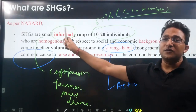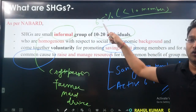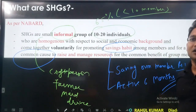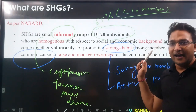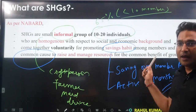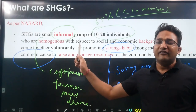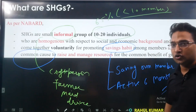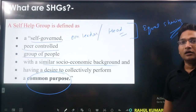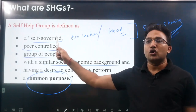As per NABARD, self-help groups are small informal groups of 10 to 20 individuals. They have a homogeneous background, they have voluntarily come together for promoting saving habits, and they have common goals. Primarily they are self-governed and peer-controlled.